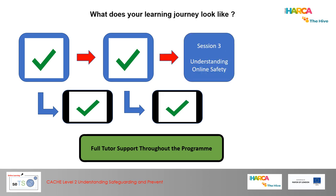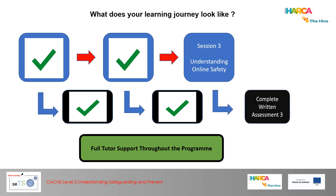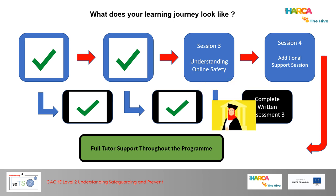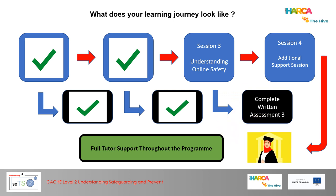This is your final session, covering Understanding Online Safety, followed by the completion of a written assessment on E-Assessor. Session 4 will be available as an additional support session if you require it. You only have to supply us with a phone number and we can arrange that for you. Once all your work has been internally and externally quality assured, you'll be awarded your level 2 certificate in Understanding Safeguarding and Prevent.